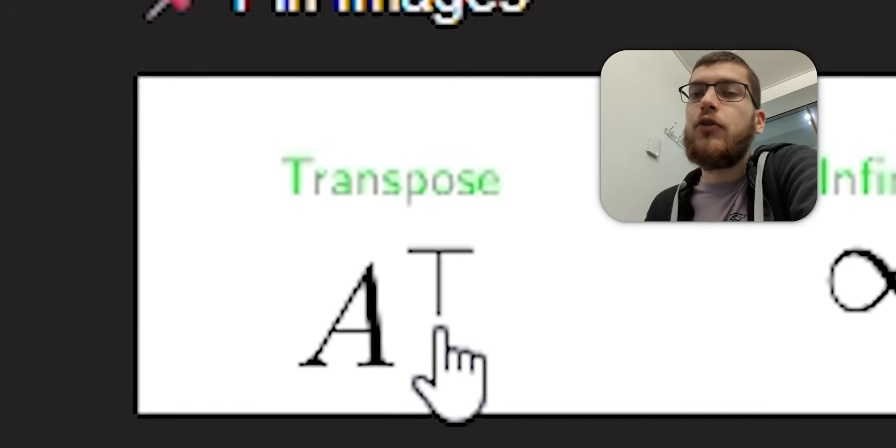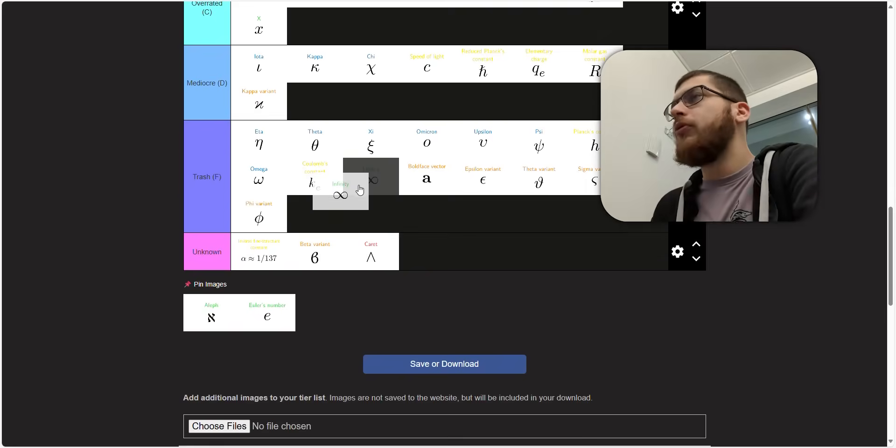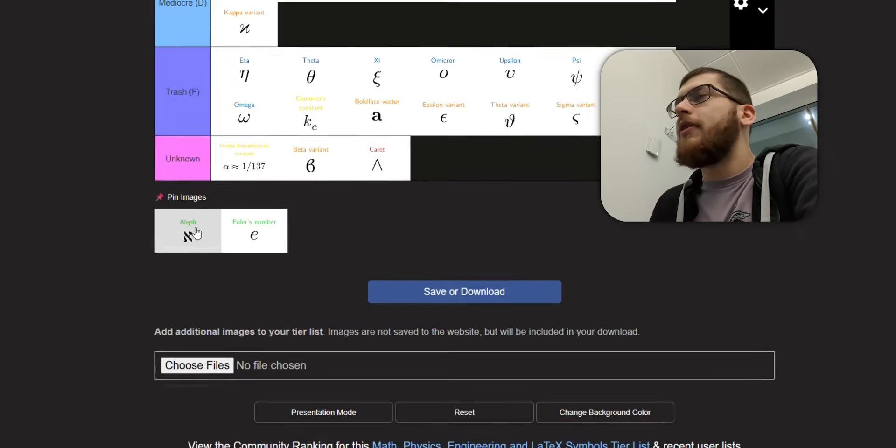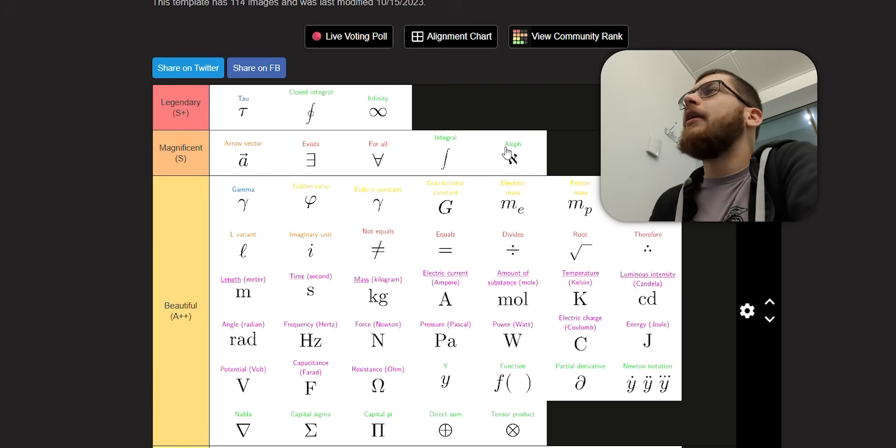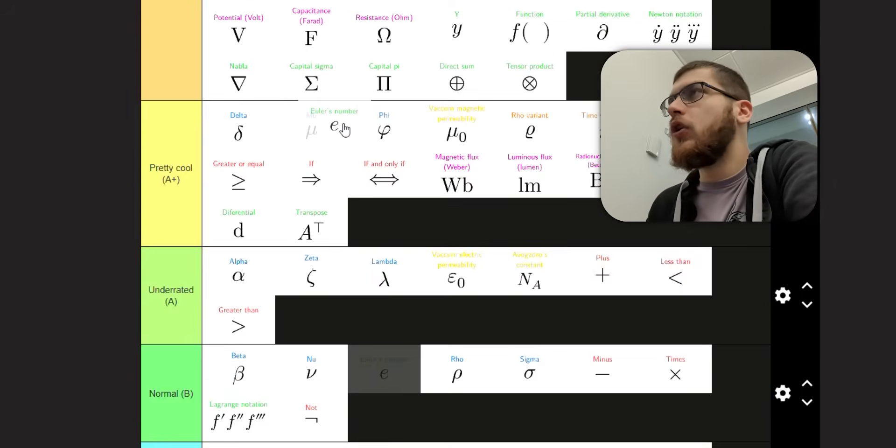A transpose can be confused with A to the power capital T, because it's not actually A to the power capital T. So it's not in beautiful, but it is pretty cool still. Infinity, very recognizable. I think that's legendary. You can't beat infinity. Aleph for aleph null. Yeah, it's pretty good. It looks ominous, and it looks like how infinity should look.